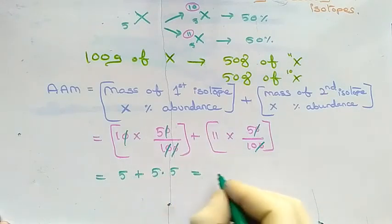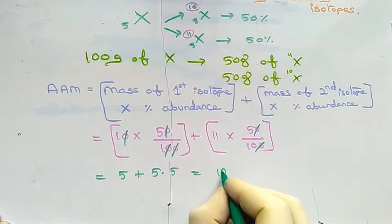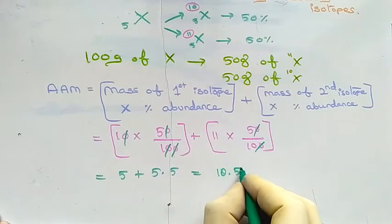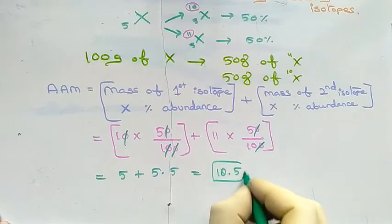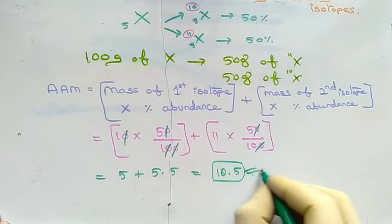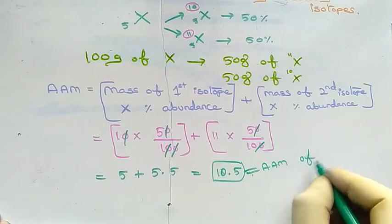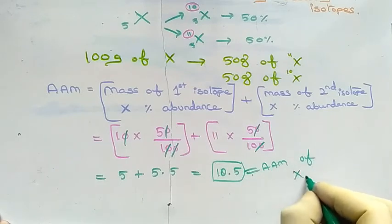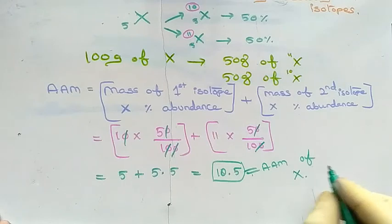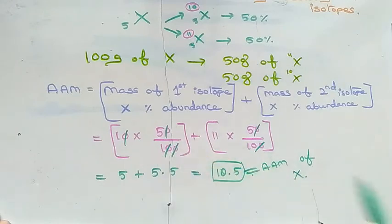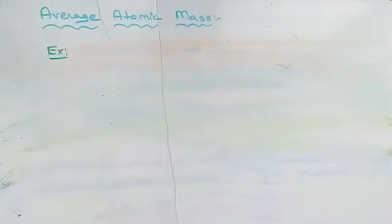By simplifying these values we will get 10.5, so 10.5 is the average atomic mass of that particular element X. This is how we need to calculate the average atomic mass for each and every element.